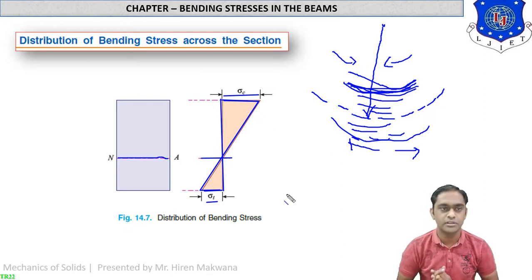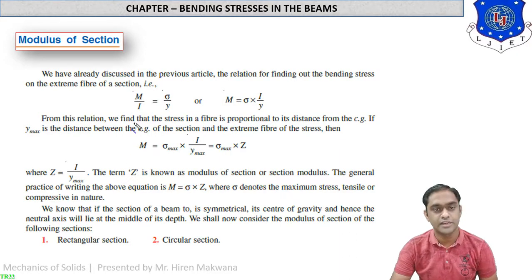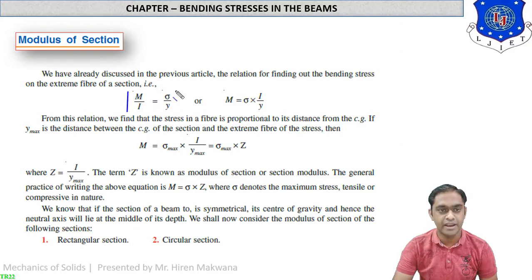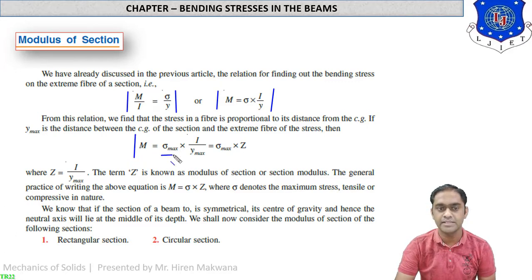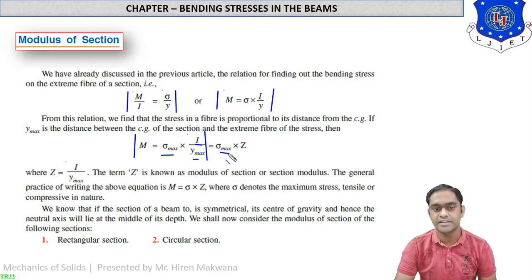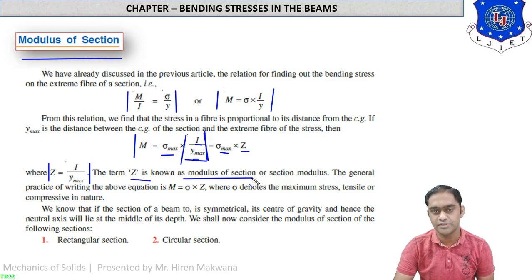Remember this diagram — we will draw it in the numericals when solving rectangular or circular sections. Our main equation is M/I = σ/Y, as derived in previous lectures. Making M the subject: M = σ × I/Y. For maximum bending moment, sigma becomes sigma maximum and Y becomes Y maximum. The term I/Y is known as Z, the modulus of section or section modulus. So Z = I/Y.